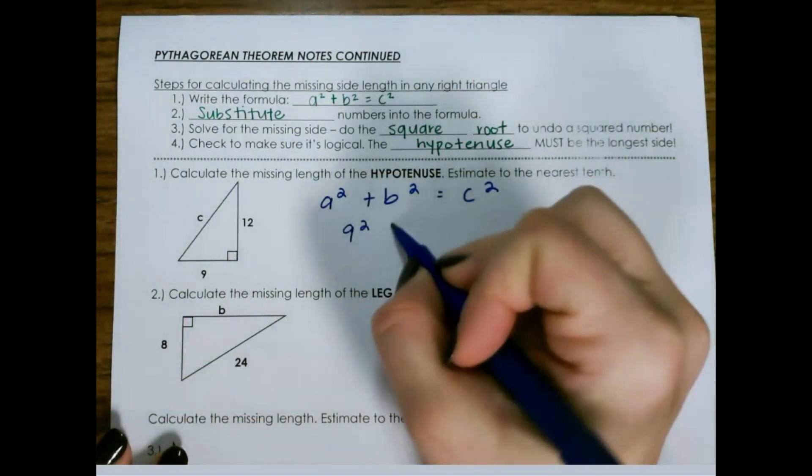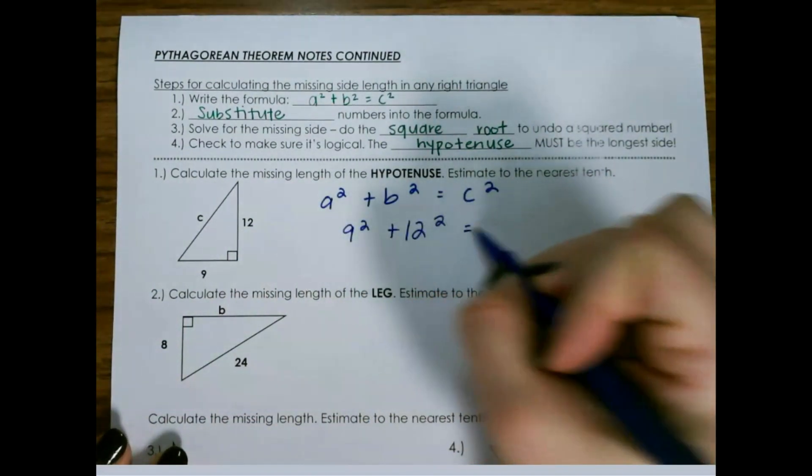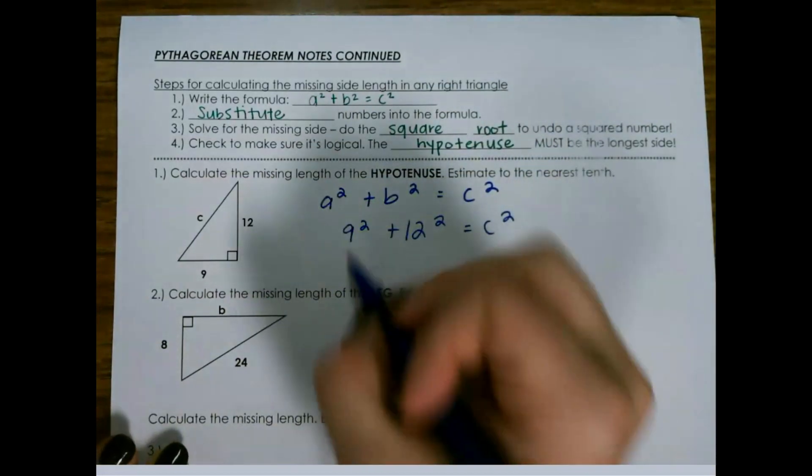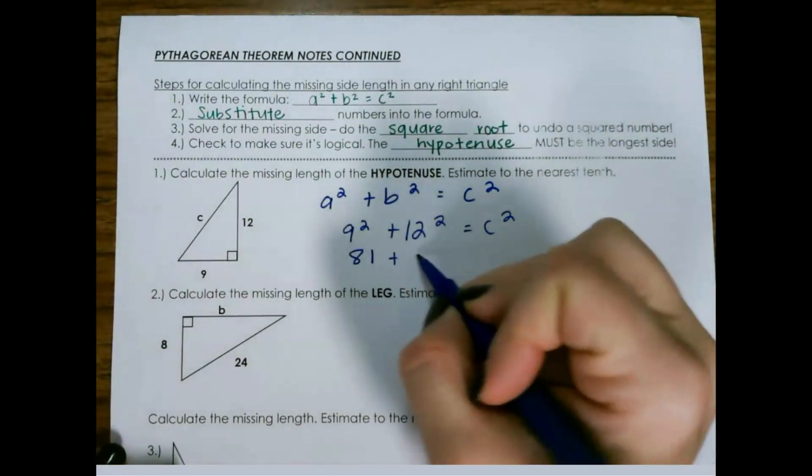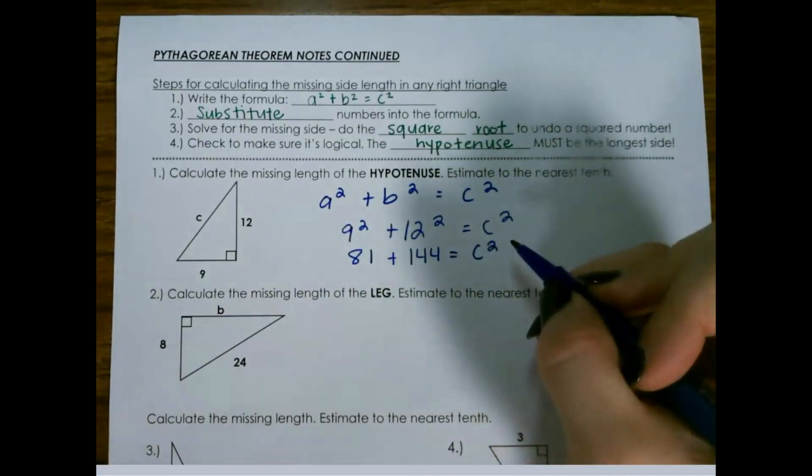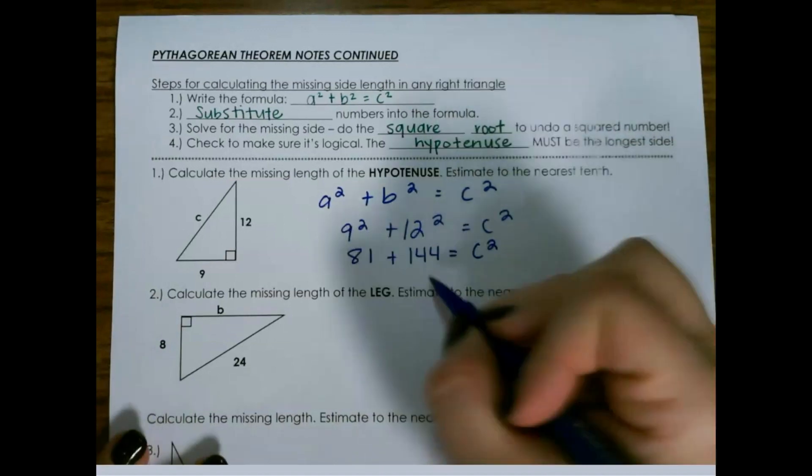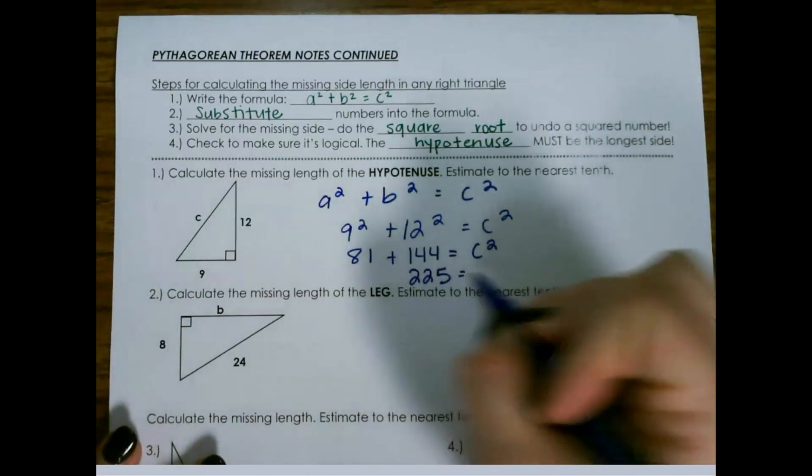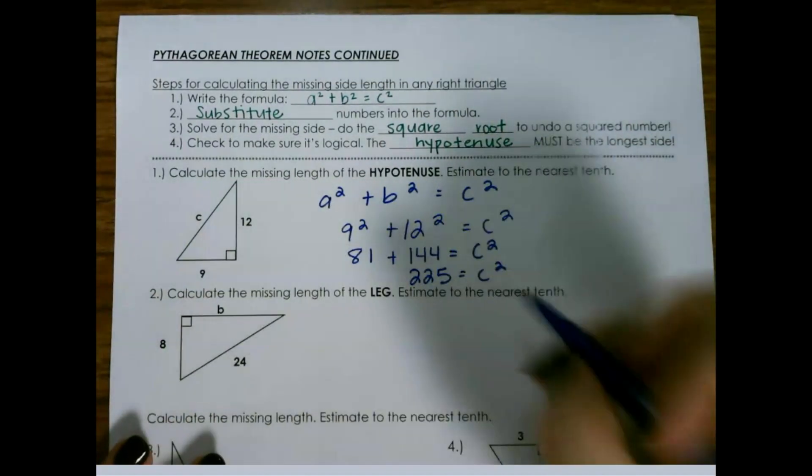So we use 9 squared plus 12 squared equals c squared. So 81 plus 144 equals c squared. So that would be 225 equals c squared.